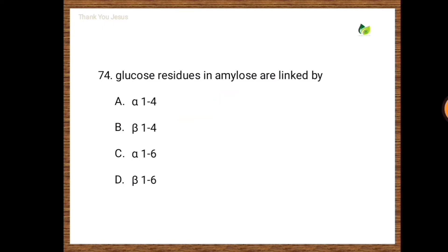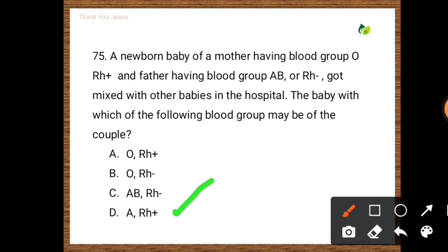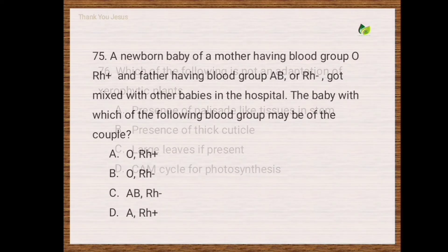Next question: A newborn baby of a mother with blood group O (Rh+) and father with blood group AB (Rh−) got mixed with other babies in the hospital. The baby with which of the following blood groups may belong to this couple? Options are O Rh+, O Rh−, AB Rh−, A Rh+. The correct option is the fourth one, that is A Rh+.